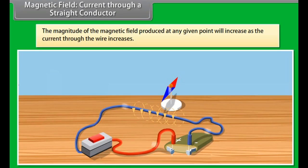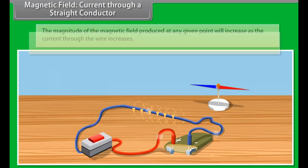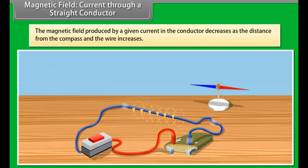Now, try moving the compass away from the current passing through the wire. You will see that the magnetic field produced by a given current in the conductor decreases as the distance from the compass and the wire increases.